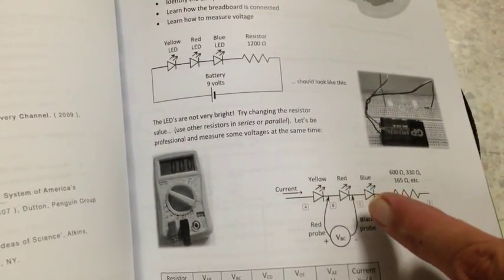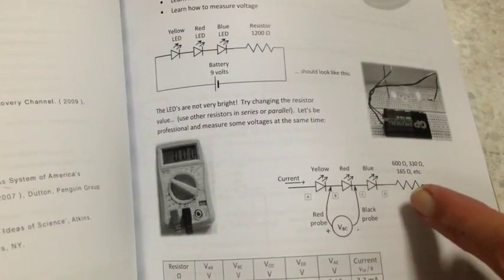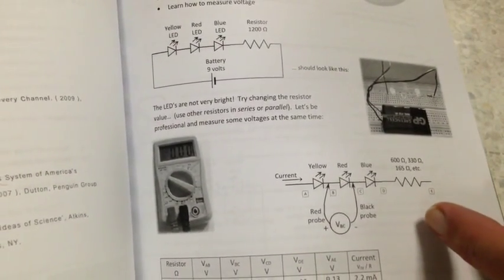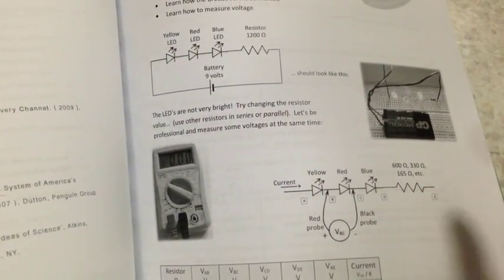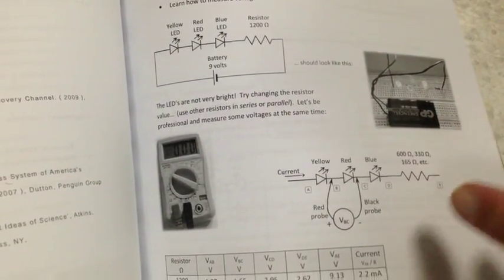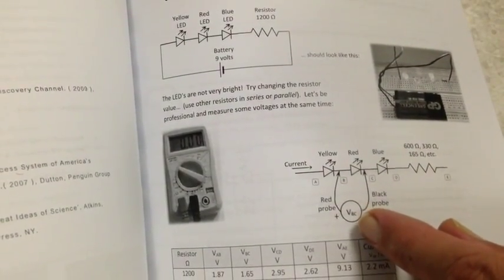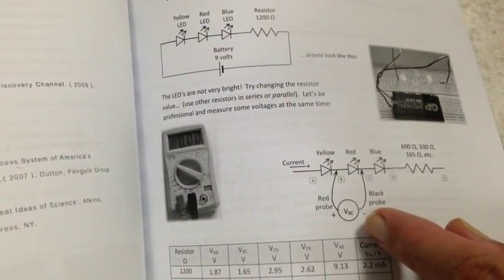We have a yellow LED, red LED, blue LED in series with a resistor. The resistor is to stop too much current going through the LEDs. We're just using a 9 volt battery and later on we're going to make some voltage measurements and a current measurement with a meter.